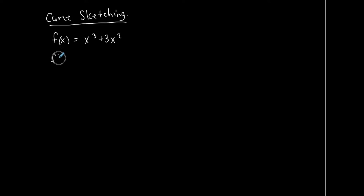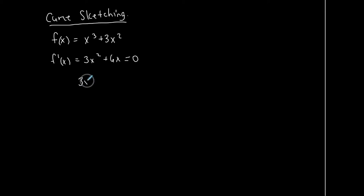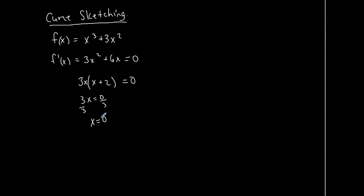To find intervals of increasing and decreasing, we're going to need the first derivative from the first derivative test. The first derivative is 3x² + 6x. We need to find the critical values — the numbers where the first derivative is equal to zero. This is a quadratic equation which factors: I can take out a GCF of 3x, leaving x + 2. If it did not factor, I'd have to use the quadratic formula. Setting each piece equal to zero: my first critical value is zero, and x + 2 = 0 gives x = −2. So I have two critical values.